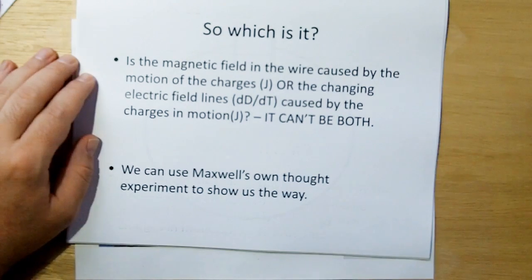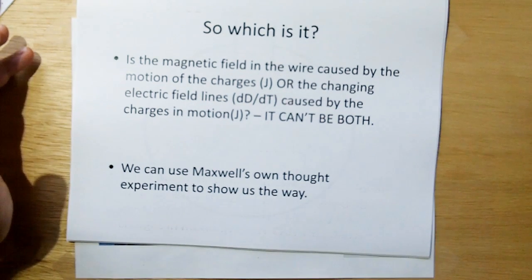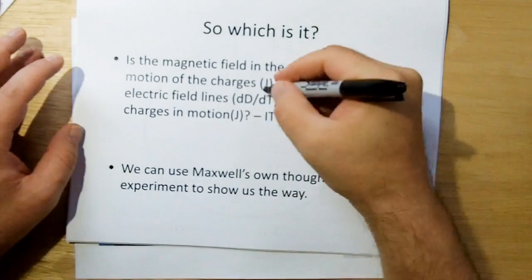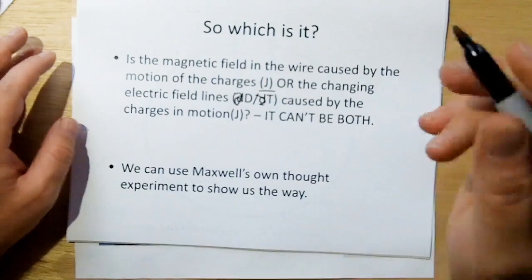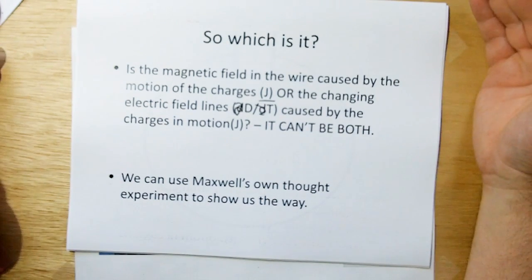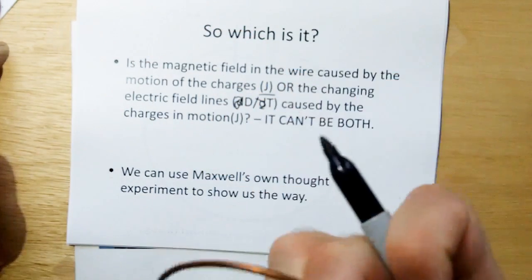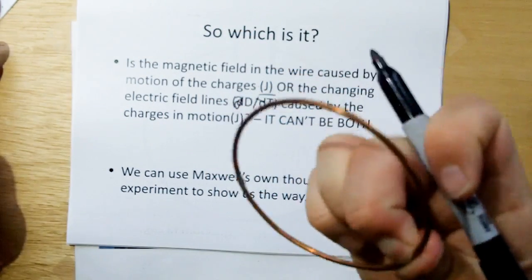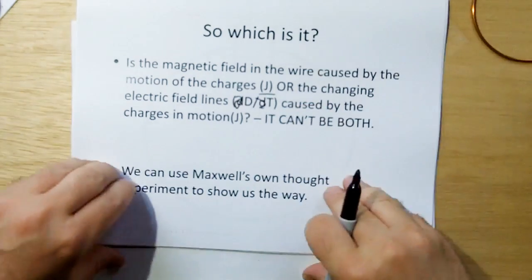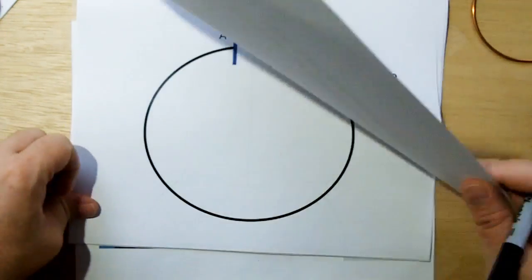And so, which is it? Is the magnetic field on the wire caused by the motion of the charges? Or is the magnetic field caused by the changing electric field lines? And this should be the partial. Or, it can't be both. Because if it were both, we'd get over unity for a solid loop of wire. And we know we can't get over unity. We can only get the magnetic field once.